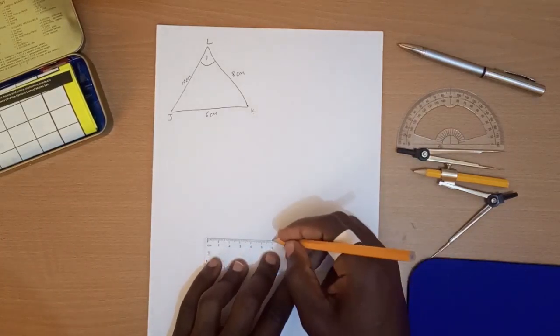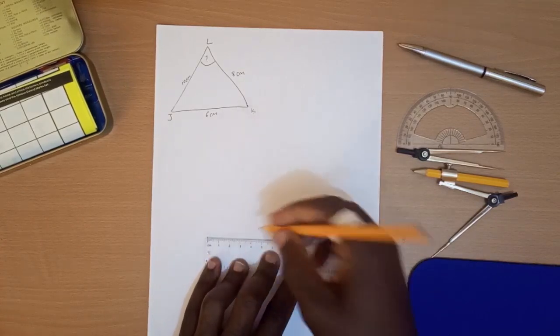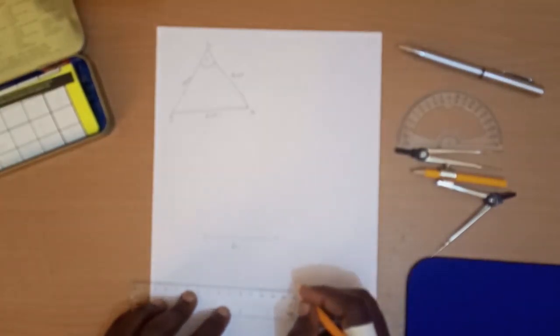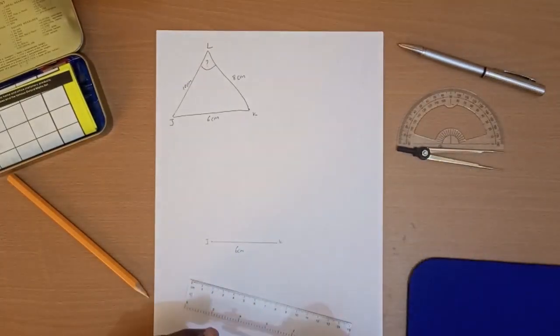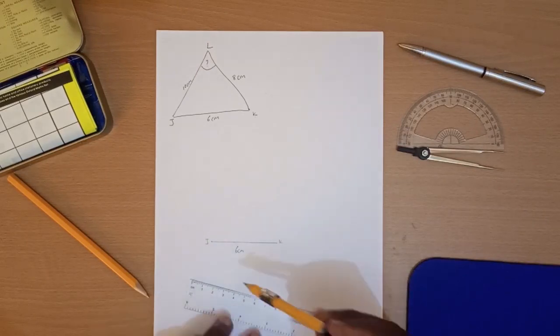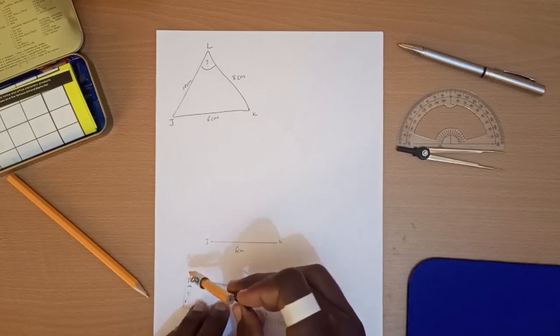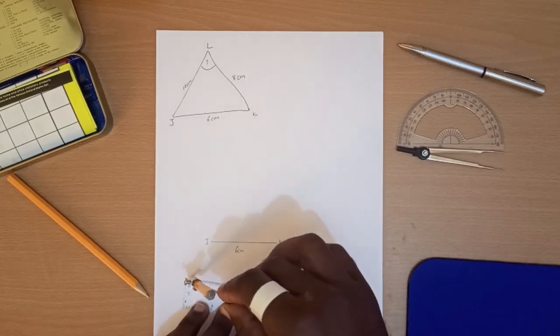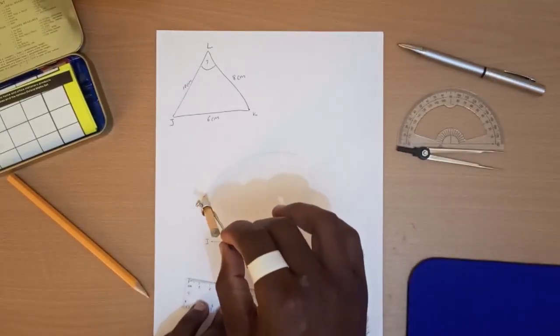JLK is 6 cm. And then we've been told that KL is equal to 8 cm. So let's measure 8 cm using your compass. Let's measure 8 cm using your compass. That's 8 cm.